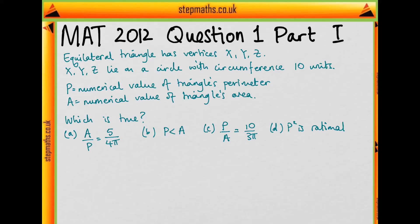In this video I'm going to go through part I of question 1 on the 2012 math paper. In this question, we have an equilateral triangle which has vertices labelled as x, y, and z. The points x, y, z lie on a circle which has circumference equaling 10.